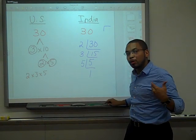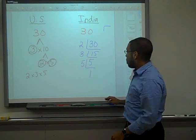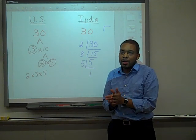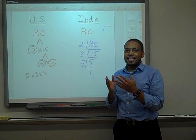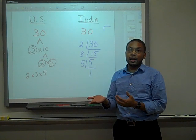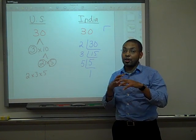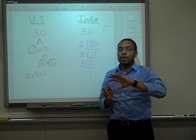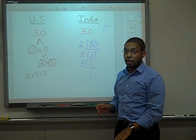Always start with your lowest prime number and work your way up. You don't have to start with the lowest prime number, but it does make sense to do that when you're going to apply prime factorization for greatest common factor and least common multiple later on.